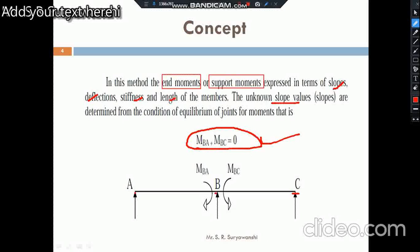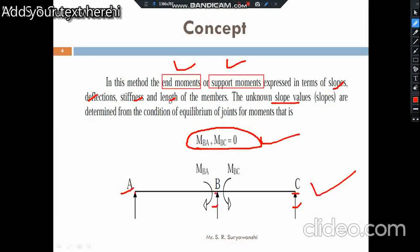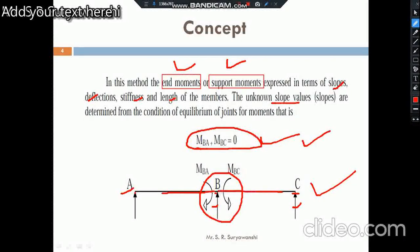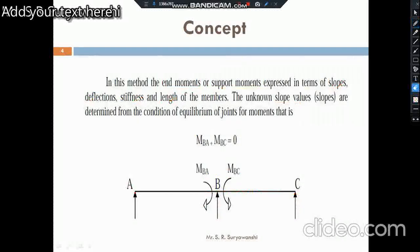So the core concept to remember: our main objective in the slope deflection method is to find out the end moment or support moment at each support, based on the slope deflection equations — which are in terms of slope, deflection, stiffness, and length. To find the unknown deformation or unknown slope, we apply the equation of equilibrium at a joint. At joint B, the net moment will be zero: MBA plus MBC equals zero. These equilibrium conditions are applied to find out the unknown displacements.